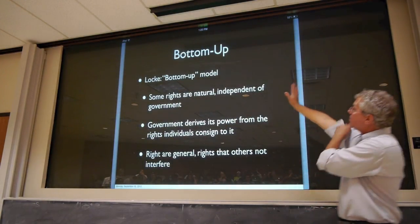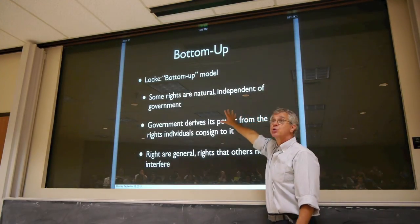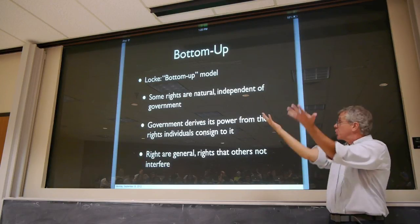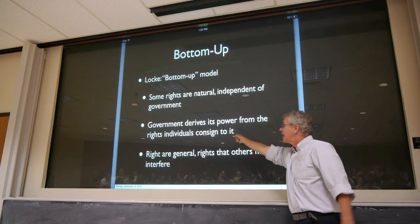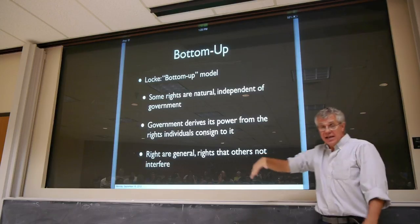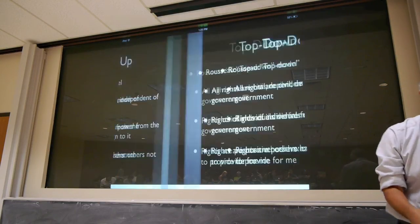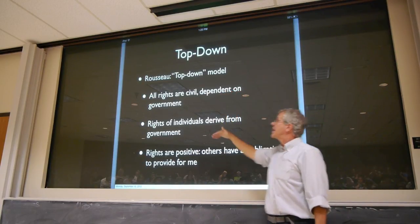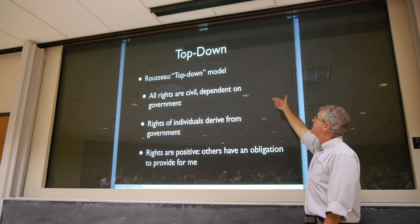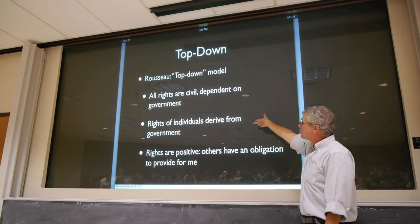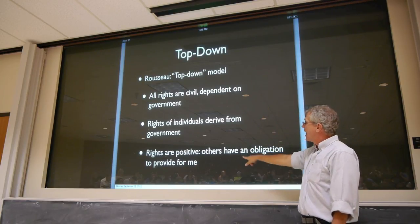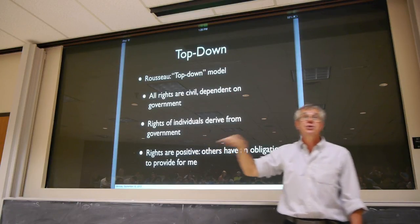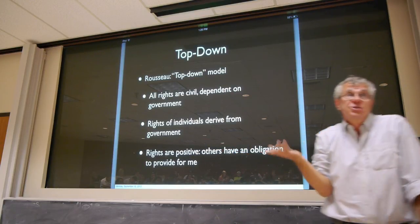So we've got a contrast here between a bottom-up model, where some rights are natural and independent of government — the government gets its power from the rights that individuals rationally, reasonably, and voluntarily consign to it — and these are rights, really, that others not mess with me. The top-down model is very different: all the rights flow from the government, all of them are civil rights depending on the government. The rights of individuals derive from government, and those rights can be, in some cases, positive — that is, other people actually have an obligation to do things for me, not merely leave me alone.